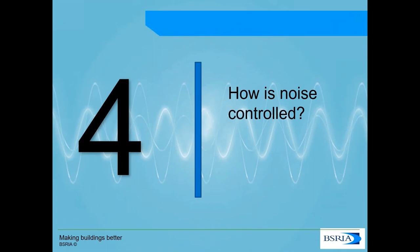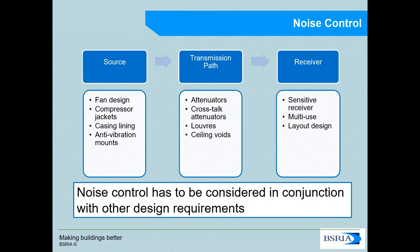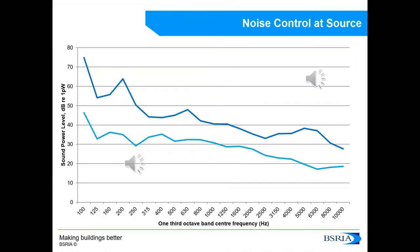Moving to our final section: how is noise controlled? Noise control can be carried out at the source, during the transmission path, or at the receiver. The source relates to the design of the product itself, including features such as anti-vibration mounts. The transmission path involves products that stop noise being transmitted through structures. The receiver considers who the sensitive receptors to noise are and what the layout is like. Noise control must always be considered alongside other design requirements such as cost, layout, lighting, and plumbing.